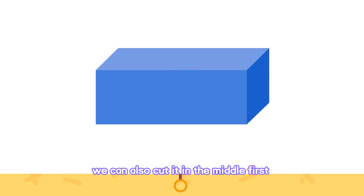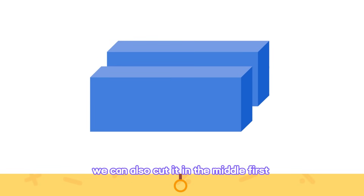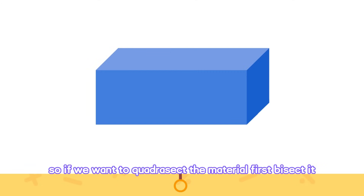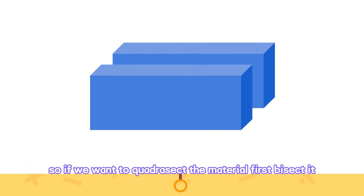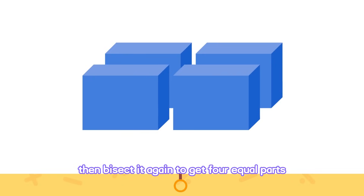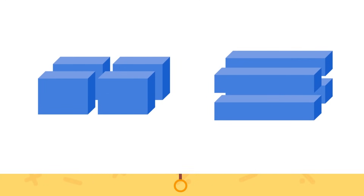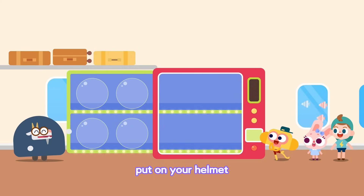We can also cut it in the middle first, and then cut it like this. So if we want to quadricect the material, first bisect it, then bisect it again to get four equal parts. Do you know other ways to quadricect the cuboid? Give it a try! Put on your helmet!